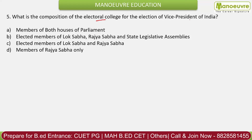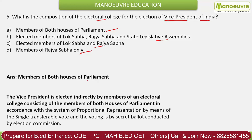Question 5: What is the composition of the electoral college for the election of the Vice President of India? Options: elected members of both Houses of Parliament; elected members of Lok Sabha, Rajya Sabha, and state legislative assemblies; elected members of Lok Sabha and Rajya Sabha; members of Rajya Sabha only. The correct answer is members of both Houses of Parliament — both elected and nominated members vote in the Vice Presidential election. The Vice President is the ex-officio Chairman of the Rajya Sabha.